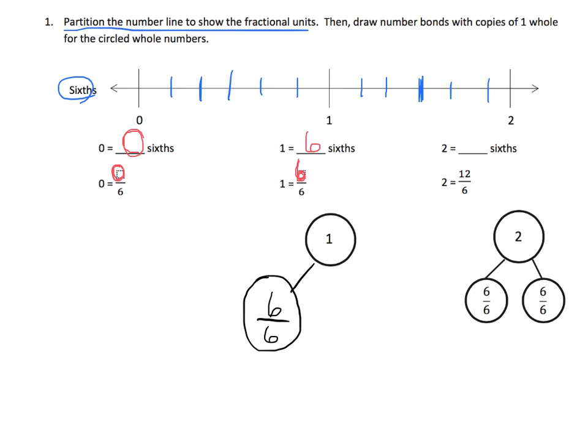And then similarly over here, 2 wholes, well from 0 to 1 is 6 sixths. So then 7 sixths, 8 sixths, 9 sixths, 10 sixths, 11 sixths, and 12 sixths. So that's 12 sixths, so 2 is equal to 12 sixths. Now, it doesn't say that we're supposed to do this, but we could write 6 sixths here and 12 sixths there. And then there, of course, is the number bond.